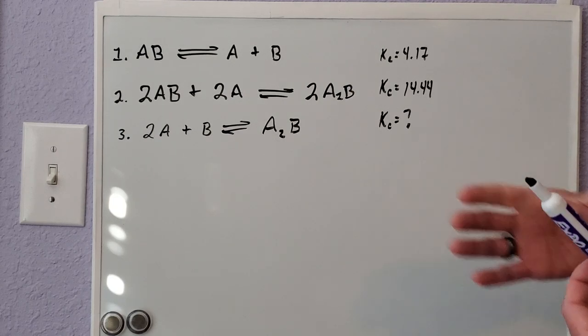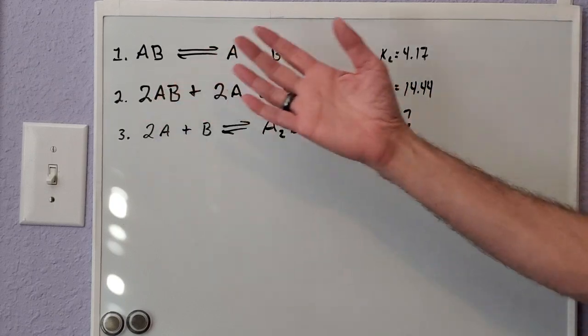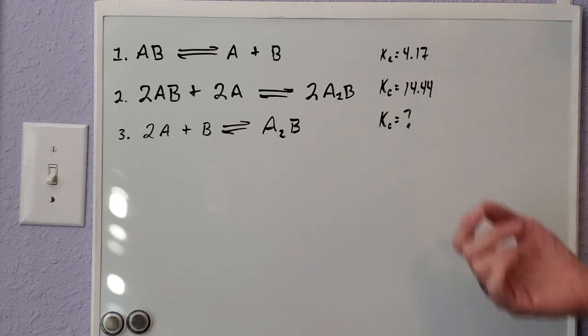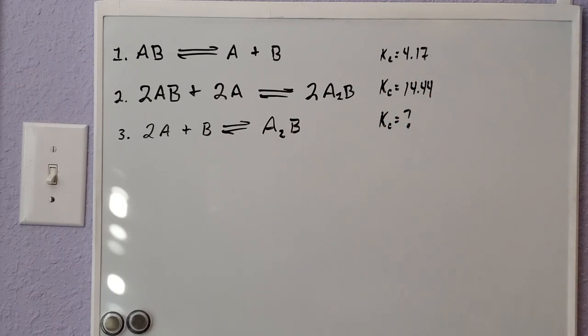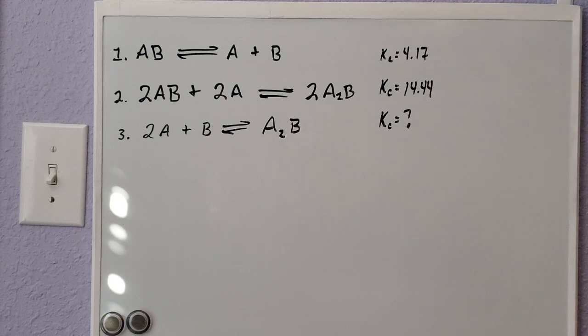In the fact that if you multiply this entire first equation by two, you're not just going to multiply your 4.17 by two—you're going to multiply it by an exponent of two, or raise it to the power of two. The same kind of deal: whenever you go through and reverse these directions, you're no longer just going to be changing the sign.